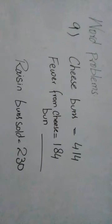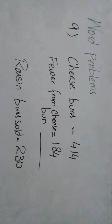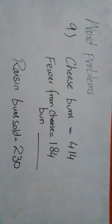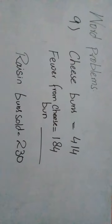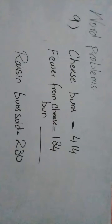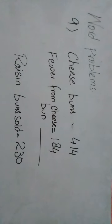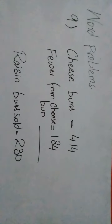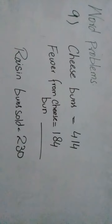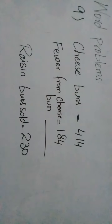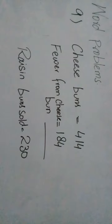Now let's see the solution of question number nine. Cheese buns equals 414. You have to subtract 184 from the cheese buns, that is 414 - 184. You take the difference of both numbers: the bakery sold 230 raisin buns.